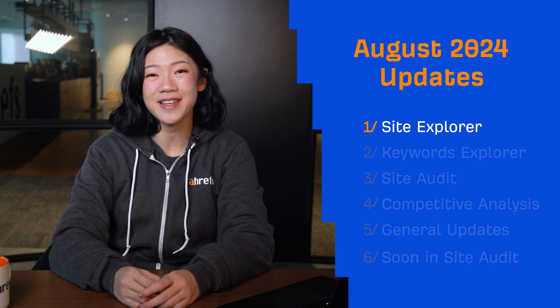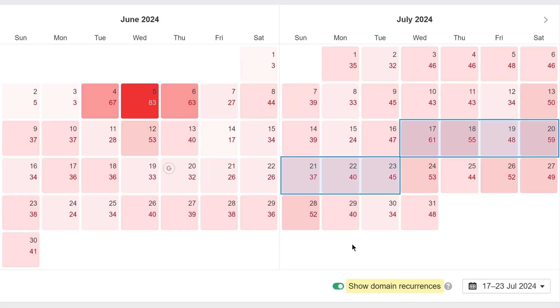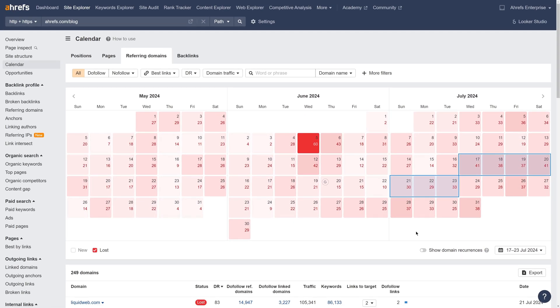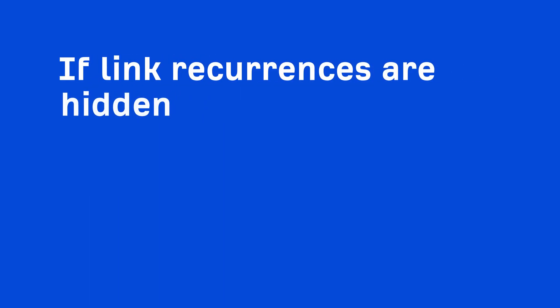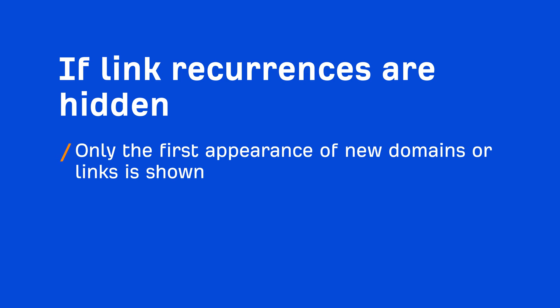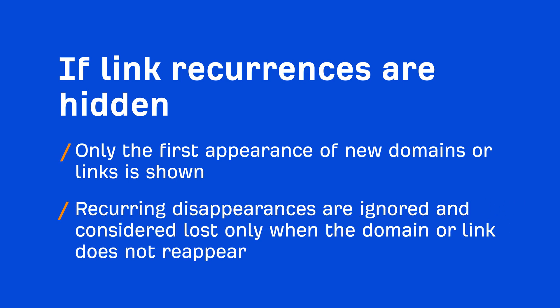Let's start with Site Explorer. We've added a no-blinks mode in the calendar report that reduces link noise. Just turn on the 'Show Domain Recurrences' toggle to hide link recurrences, also known as link blinks, in your report. When hidden, only the first appearance of new domains or links is shown. Recurring disappearances are ignored and considered lost only when the domain or link does not reappear.